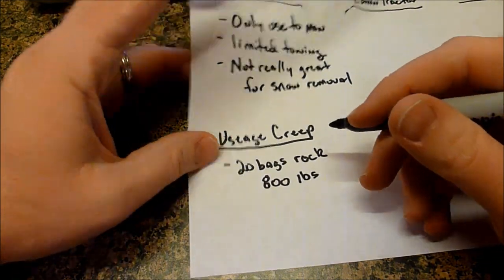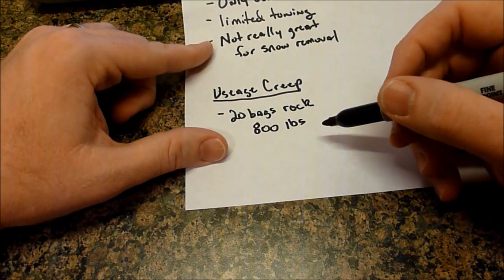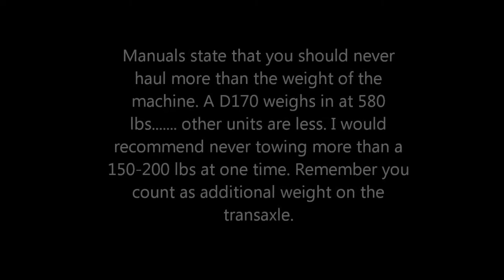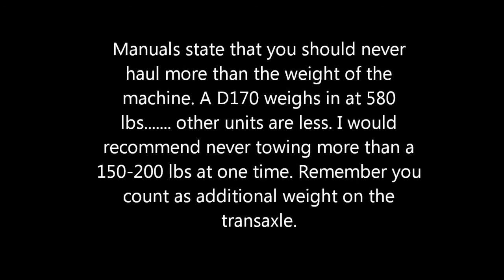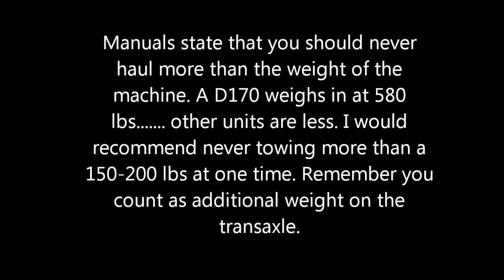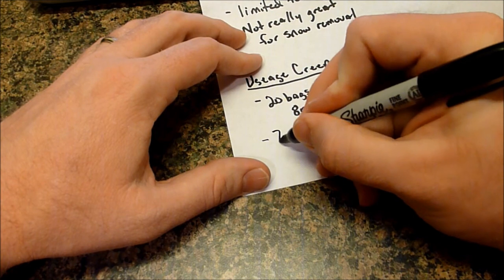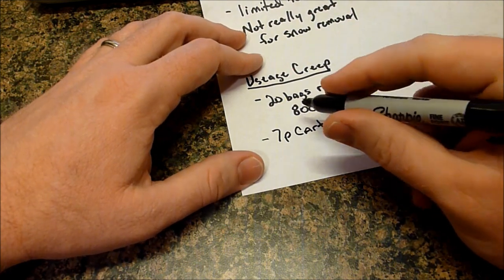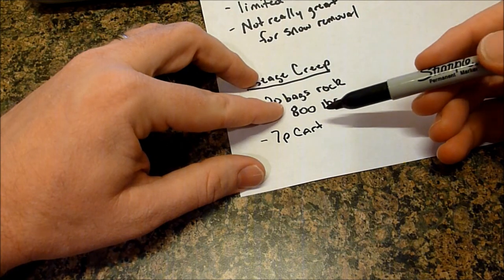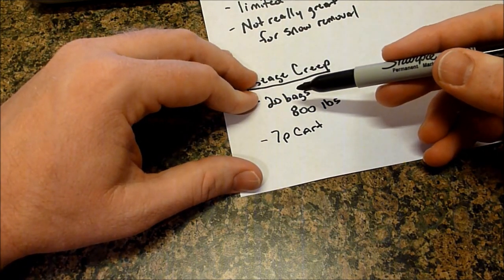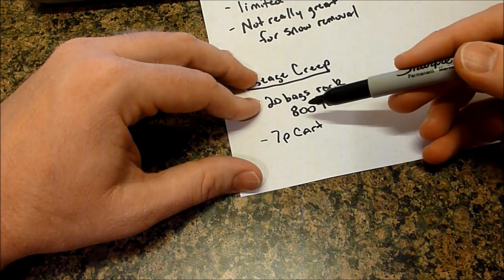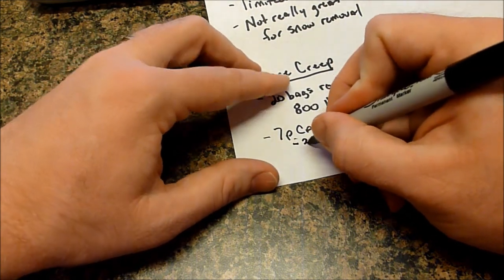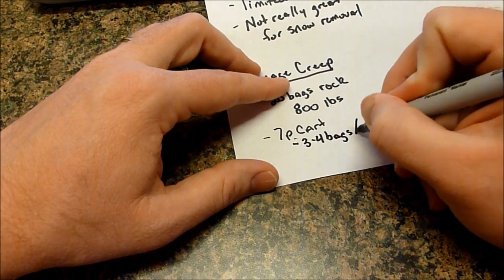Now, according to a lot of the mower instruction manuals, you should never haul more than like 150, 200 pounds. So say you have a John Deere 7P cart that you got with your purchase of your D series, something like that. That machine cannot tow 800 pounds. It can tow a couple hundred pounds. Well, you have 20 bags. So 20 bags, every 10 bags is 400 pounds. Well, guess what? You're only going to actually be able to tow, theoretically, you're only going to be able to tow three or four bags of rock at a time.